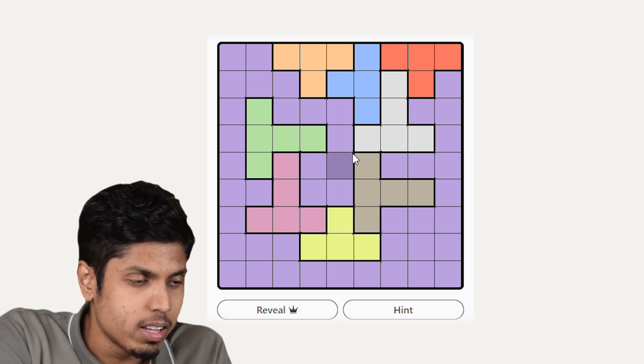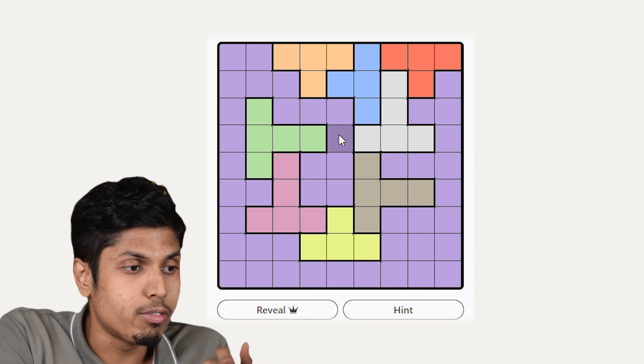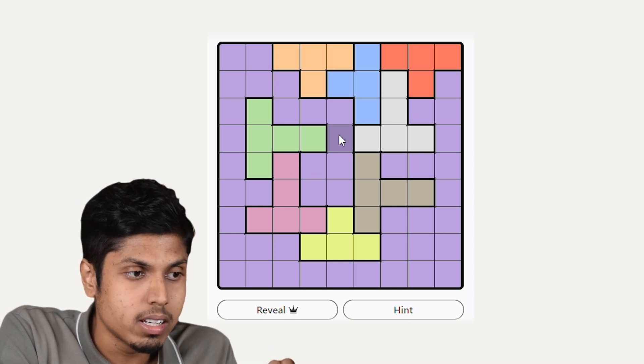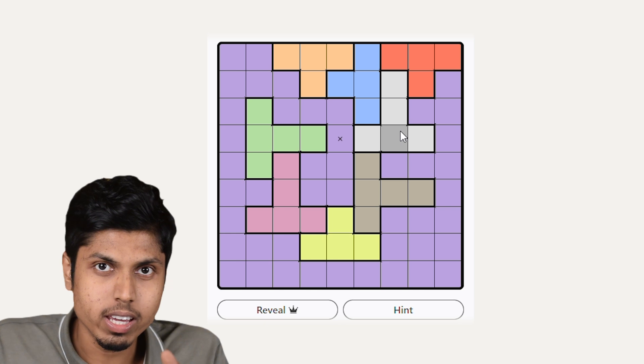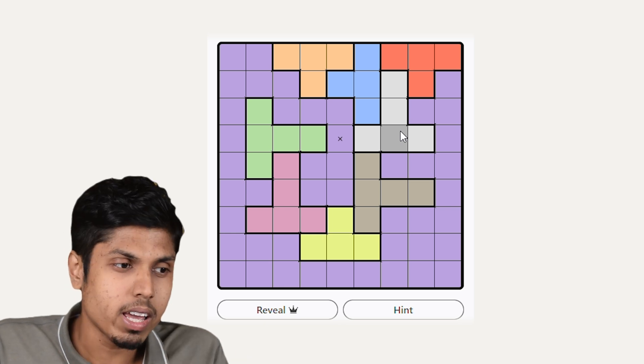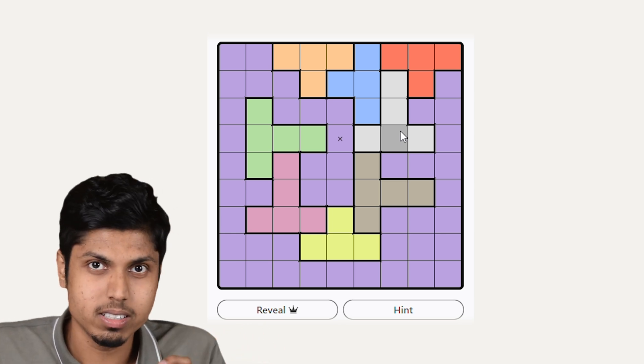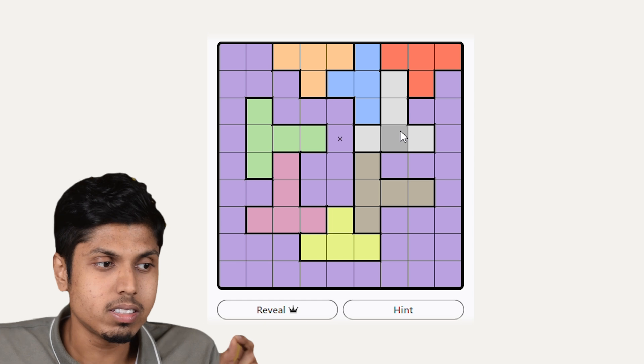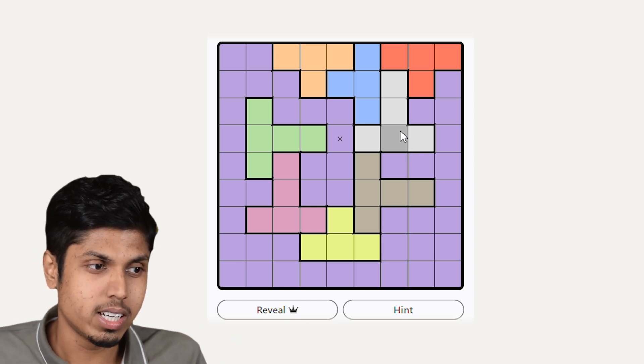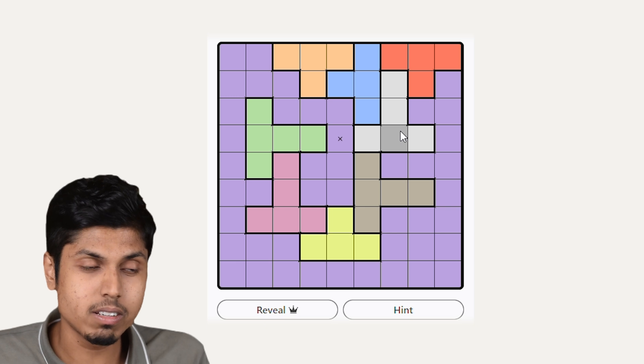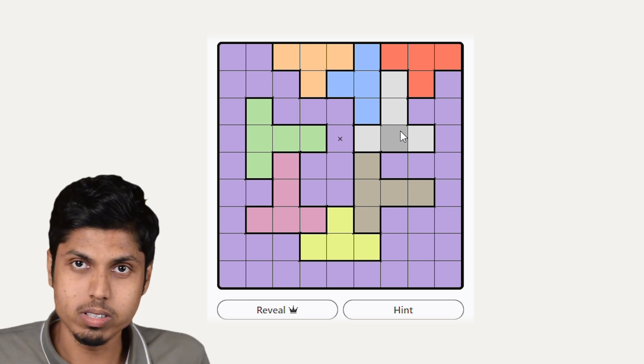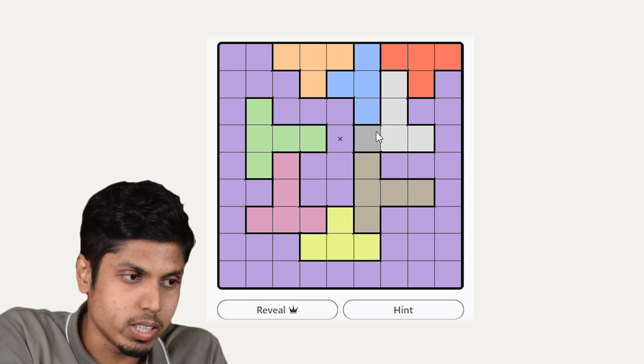There is a facility to make a square abandoned or devoid of any crown by single click. This shows you a cross mark indicating that no crown can be filled as it will not abide by the rules. We will also be using this.